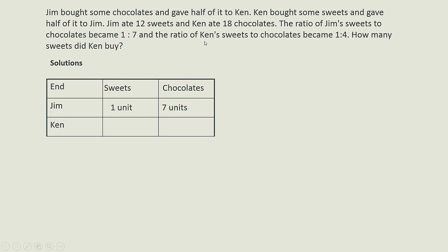For Ken, the ratio is 1 to 4, but I write it as 1 part to 4 parts. I can't write it as units because they are not the same units as Jim's.